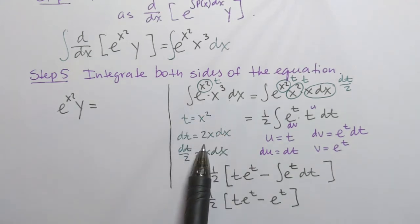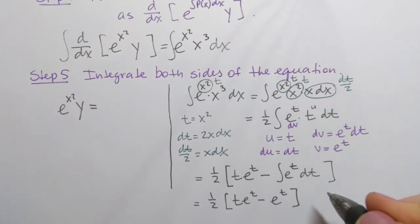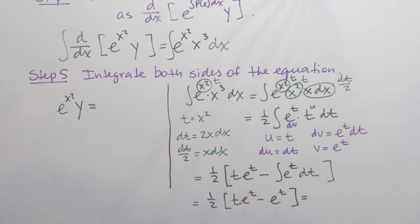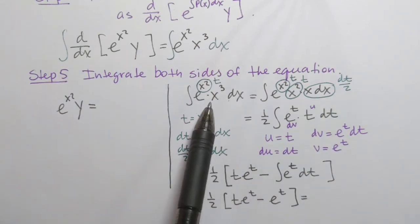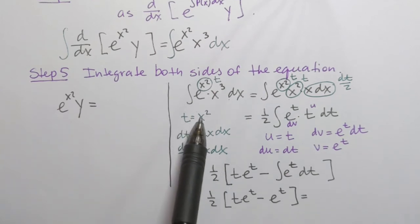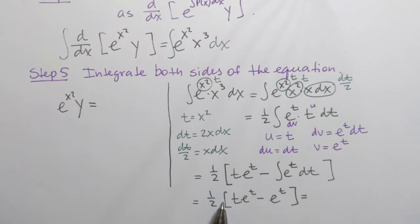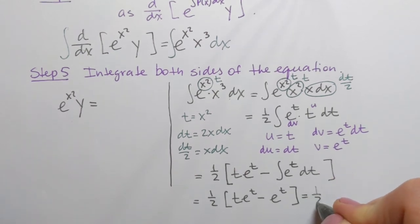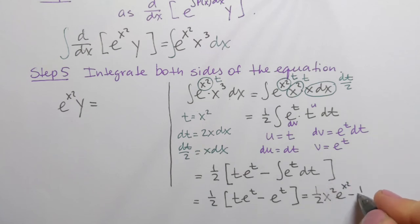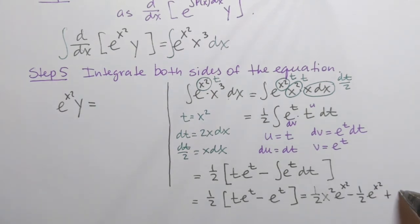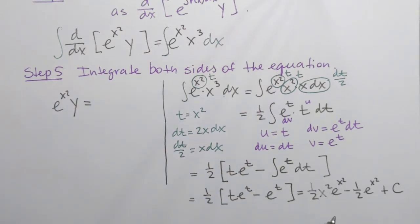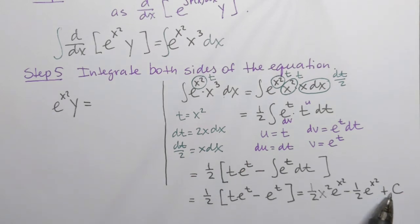We used substitution first and then integration by parts — two techniques combined. Now we need to go back to the original variable x by recalling that t equals x squared. Distributing the one half, we get one half x squared e to the power x squared minus one half e to the power x squared, plus c.